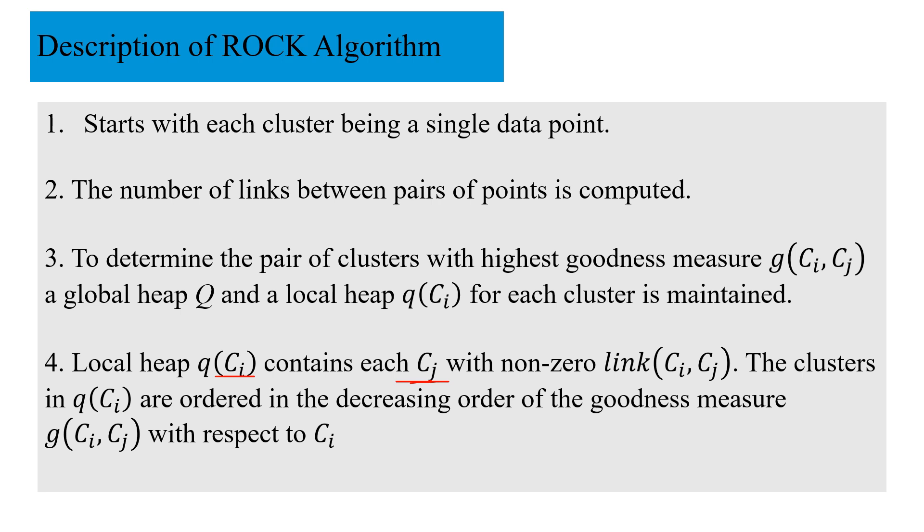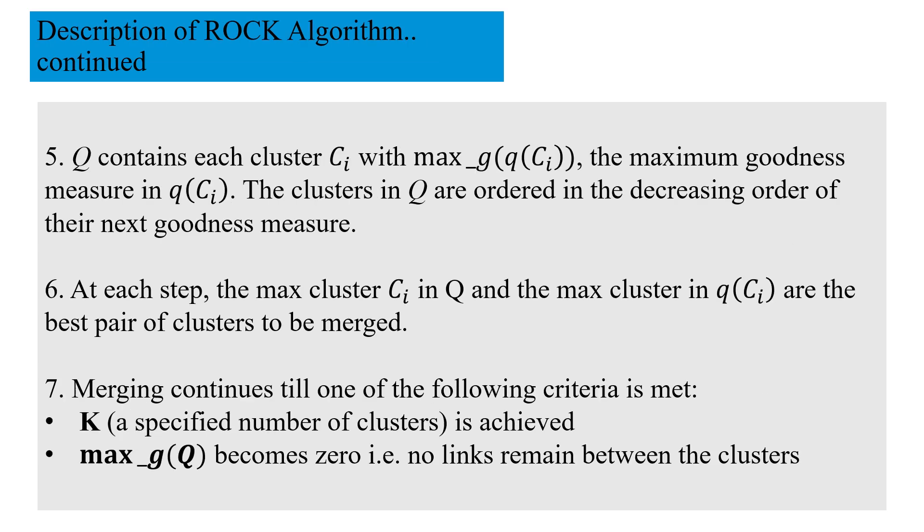Q(ci) is containing all those clusters with nonzero link from Ci, and they are ordered in the decreasing order of the goodness measure G(ci, Cj). G(ci, Cj) is computed by that given formula, and with respect to Ci this is how they are stored.